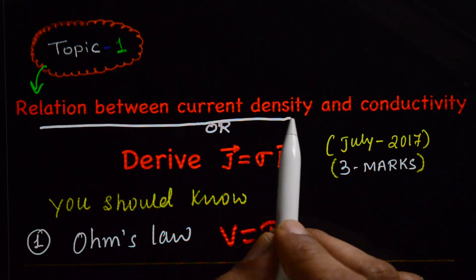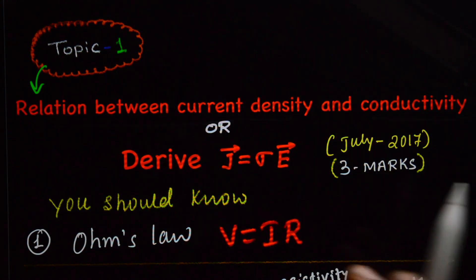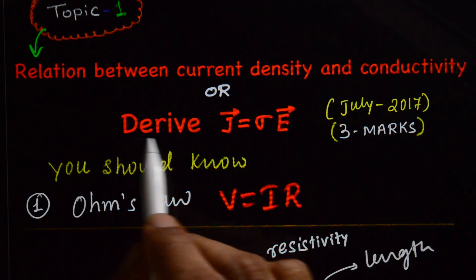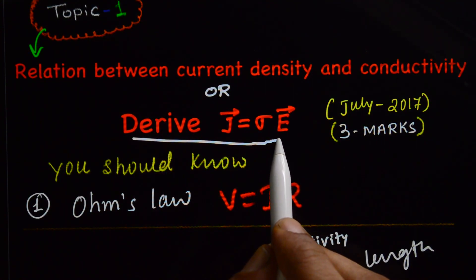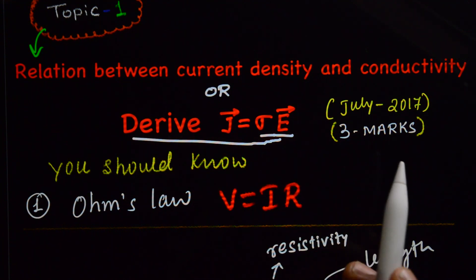Relation between current density and conductivity, or you may ask the question, derive an expression that is J is equal to sigma into E.